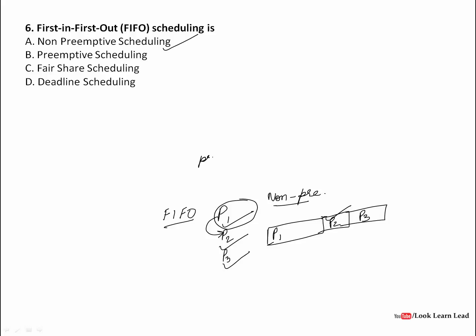What can be a preemptive scheduling example? Priority scheduling is preemptive — if P1 is of lower priority and P2 arrives with higher priority, P2 will preempt P1, meaning P1 stops executing and P2 takes its place. But in FIFO it is non-preemptive, so our answer is non-preemptive scheduling.